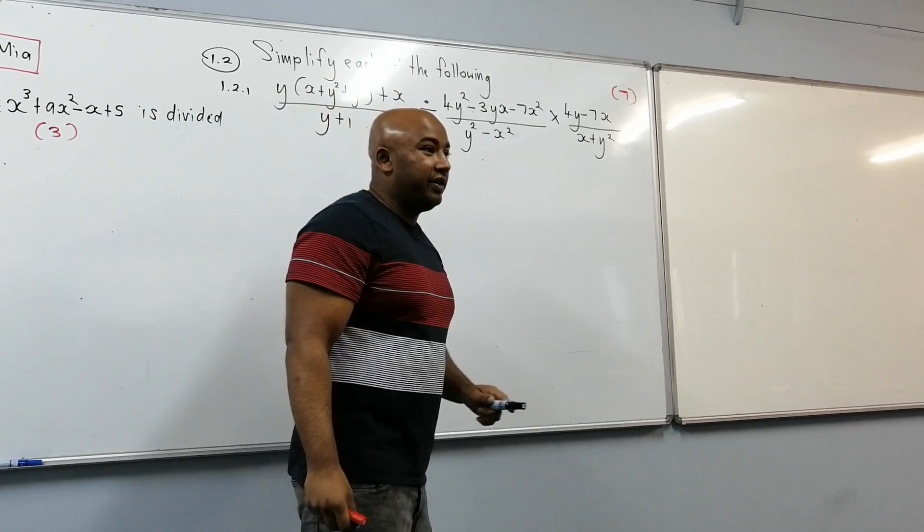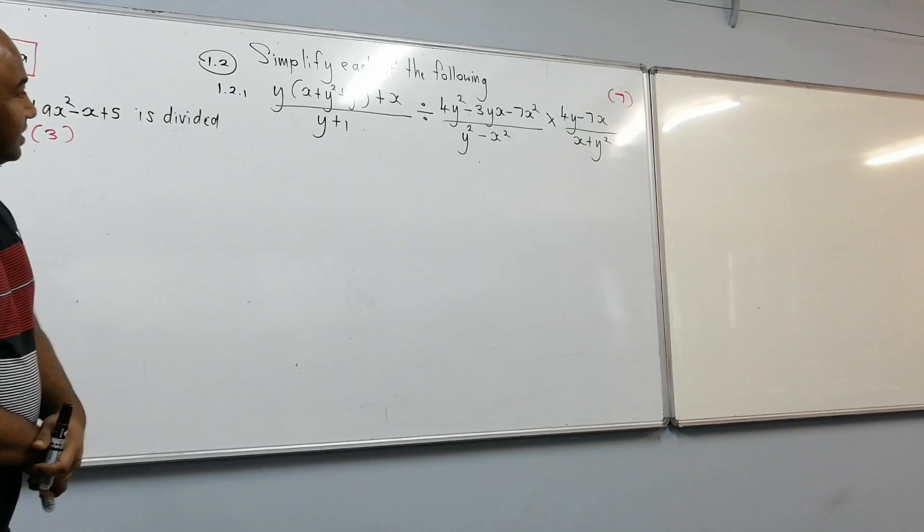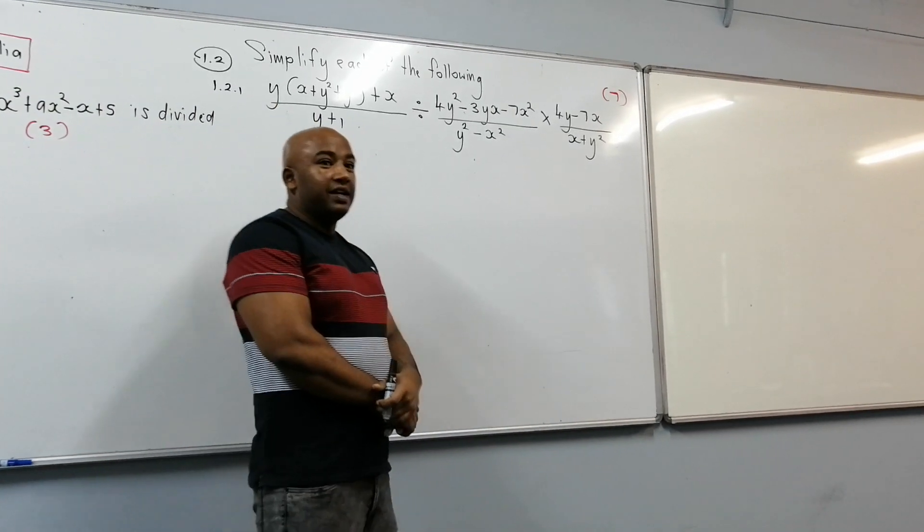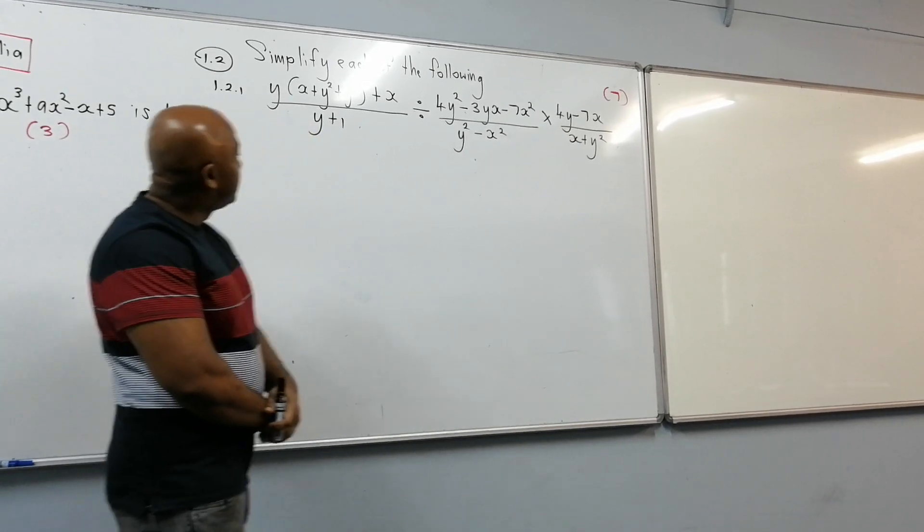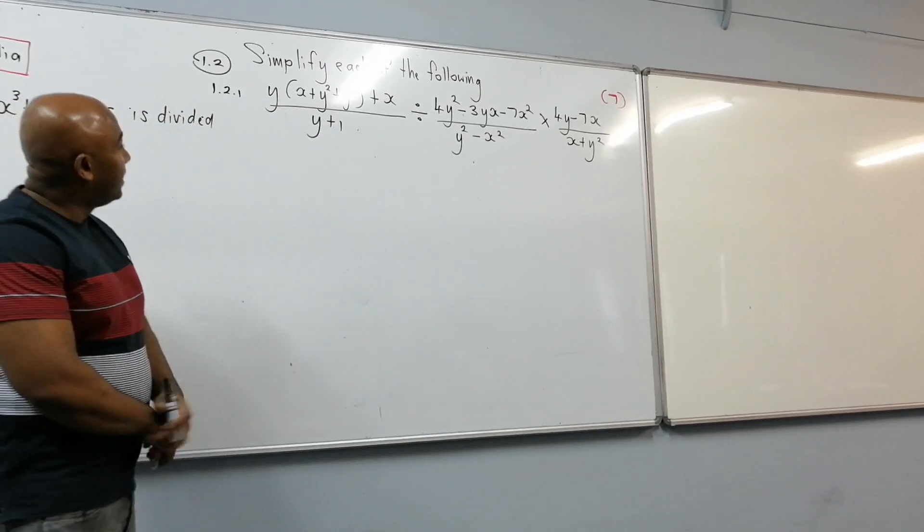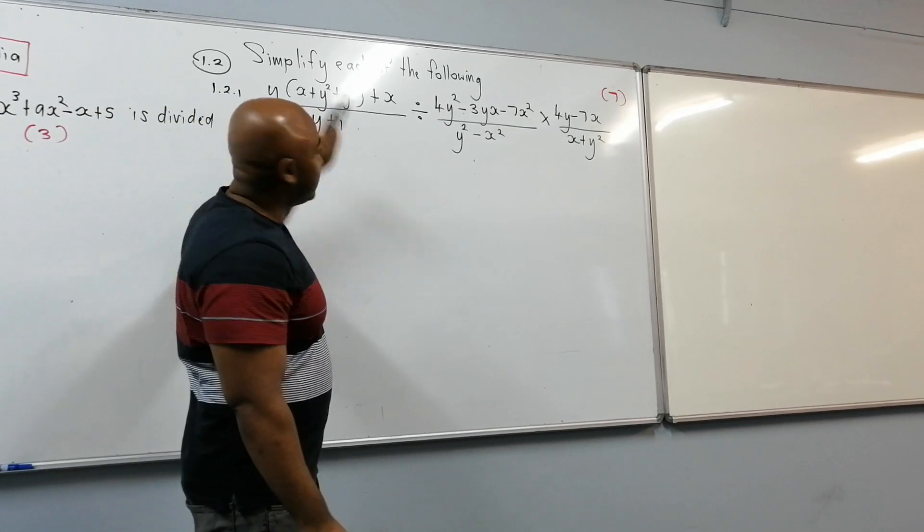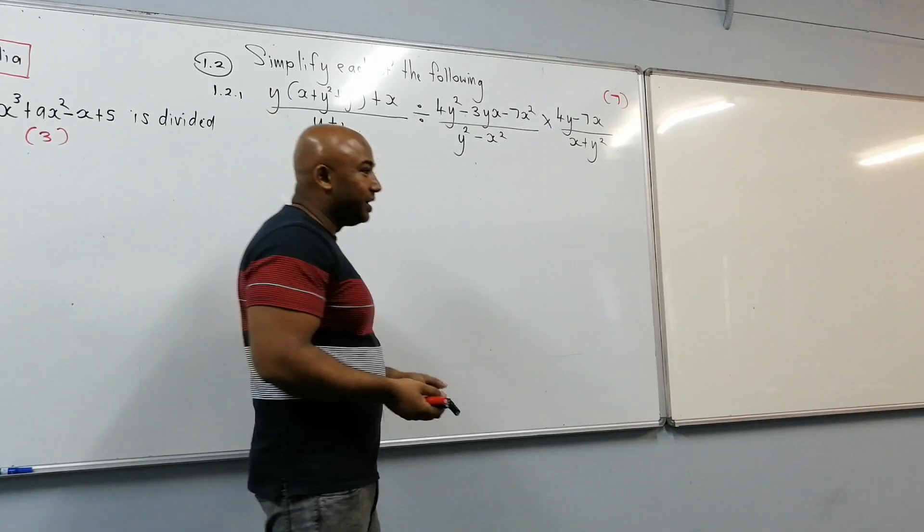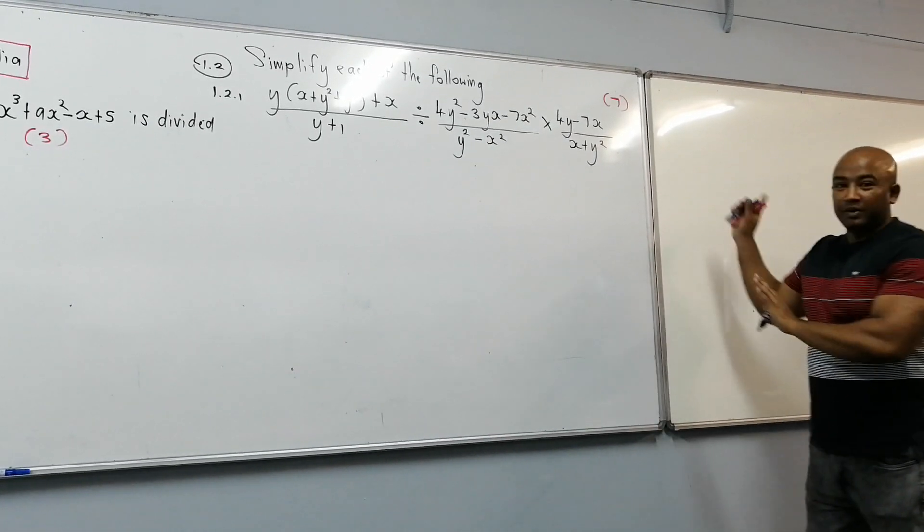Alright, so simplify each of the following. This one is 7 marks. So we can box factorization, multiplying and dividing of fractions. So let's see, what do you think we can do now? If I multiply this completely, will it help me? Let's see. So I'm just going to do it on one side.